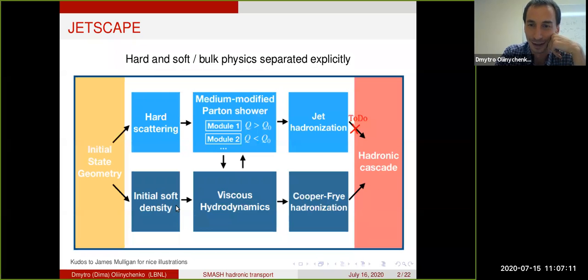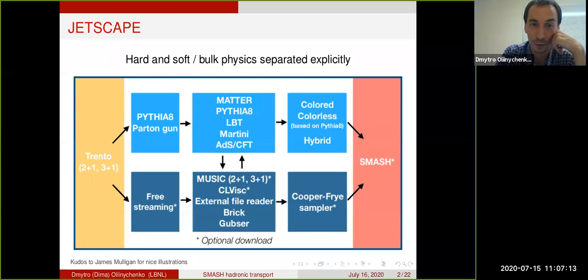Let's go and look at the codes. This is also what James was showing. There are different codes that work on the hard part and there are different codes that work on the soft part. You can see SMASH is on the very right. It is doing the hadronic rescattering, and we are going to be talking about the SMASH hadronic transport here.